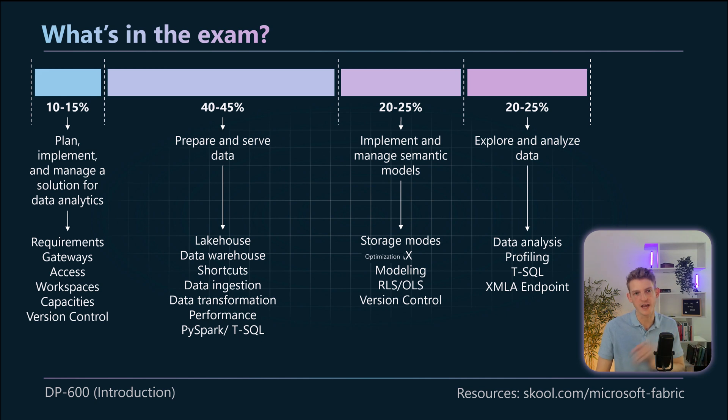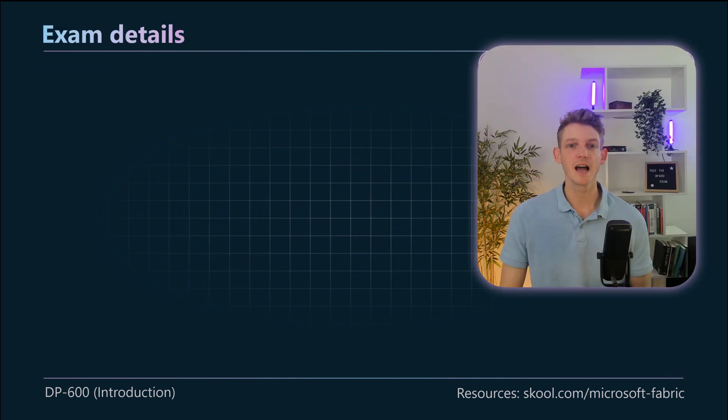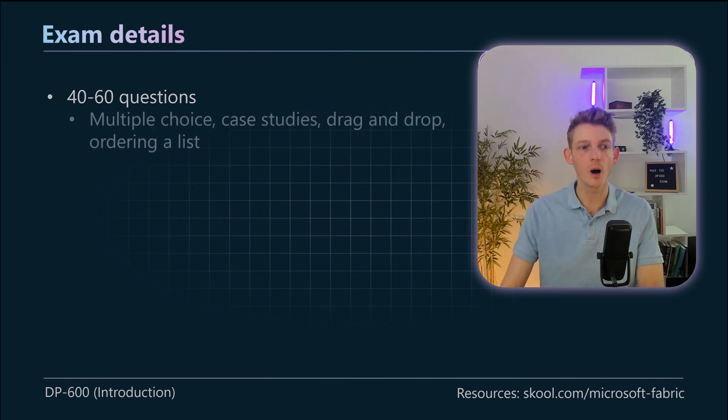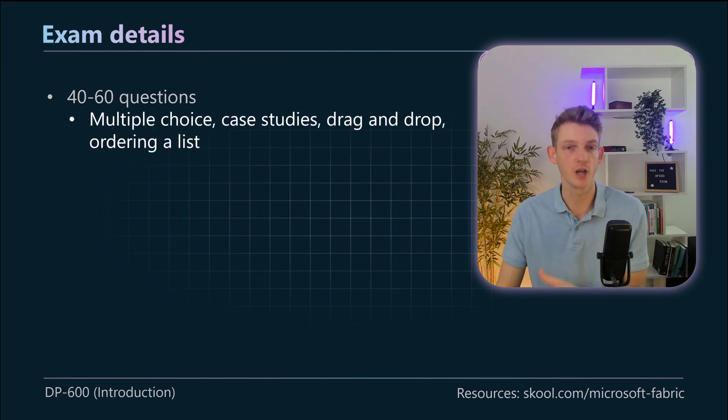So in the exam there is between 40 and 60 questions and the results are scaled and you get given a result between 0 and 1000. So the pass mark here is 700 out of 1000 and that's the scaled score, so that's something to bear in mind.